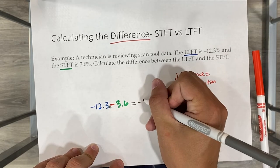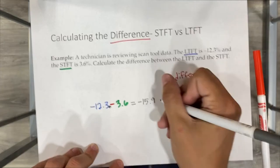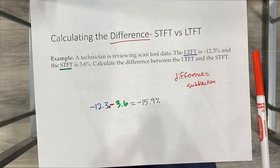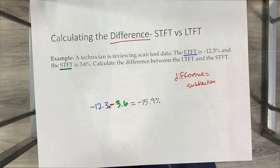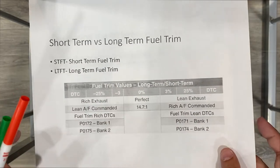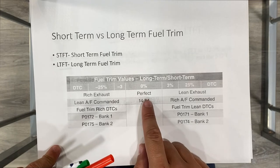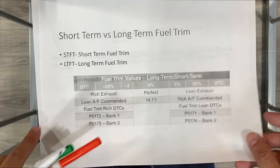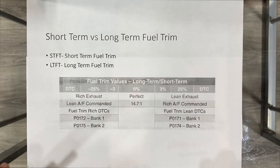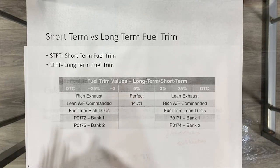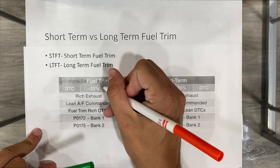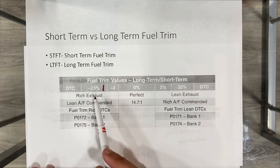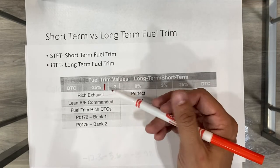The answer is negative 15.9 percent. To take it back to the context of the original problem, remember that we want to see a zero percent difference between our short and long-term fuel trim values. So to calculate out a difference of 15.9 puts it somewhere here on this line, which means we're going to have richer exhaust.